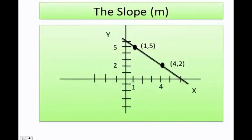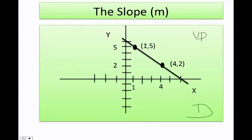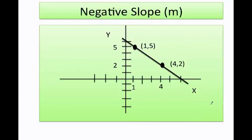For example, let's say I have a line and I want to know if the slope is positive or negative. I'm going to call the top 'upstairs' and the bottom 'downstairs.' As you can see here, my slope is going downstairs — therefore this is a negative slope.